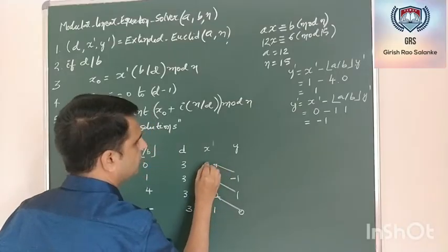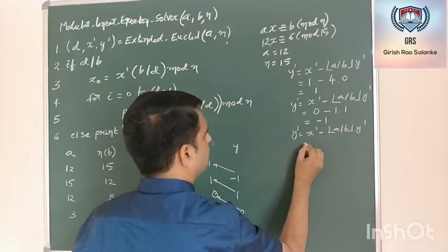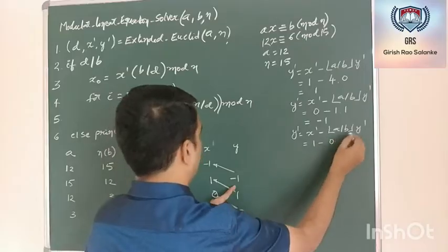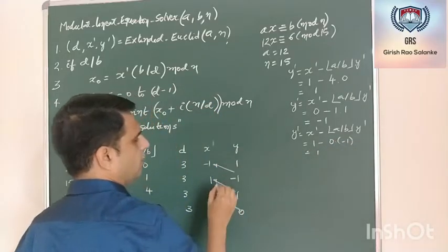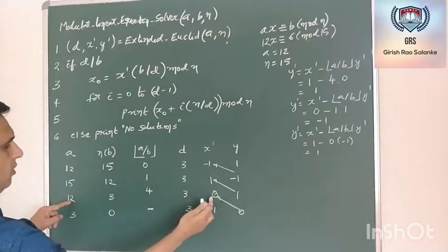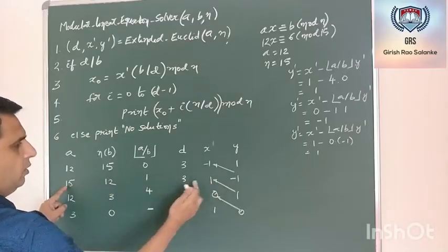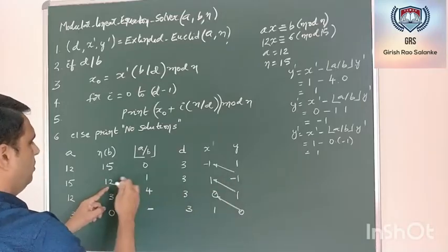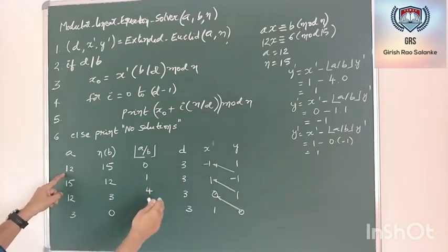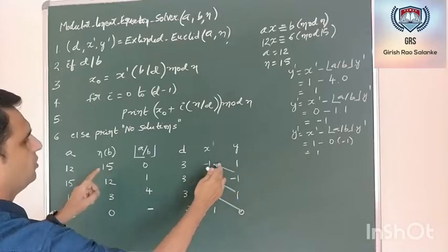For the next step, y dash equals x dash minus (a/b) times y dash. x dash is 1, a/b is 0, so 1 minus 0 times minus 1 is 1. Now checking all iterations: 12 times 0 plus 1 times 3 equals 3. Fine. Next: 15 times 1 is 15, minus 1 times 12 is 12, so 15 minus 12 is 3. Next: 12 times minus 1 is minus 12, plus 15 times 1 is 15, minus 12 plus 15 is 3. This was the extended Euclid's algorithm result.